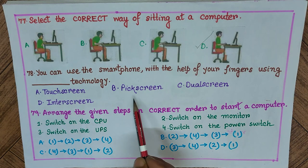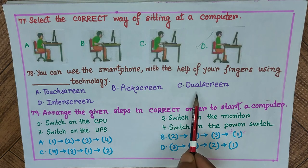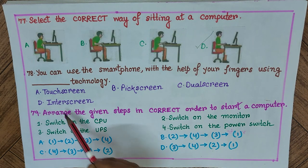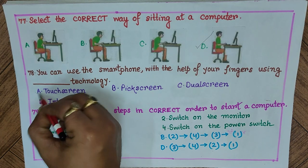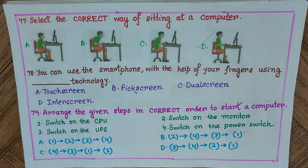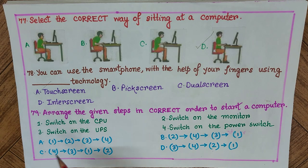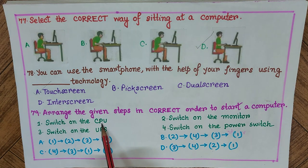Question 78: You can use a smartphone with the help of your fingers using what technology? A) touch screen, B) pick screen, C) dual screen, D) inter screen. The answer is A) touch screen.